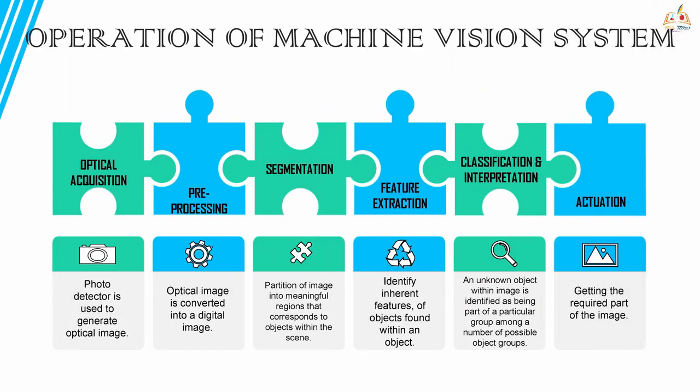Let's look at the operation steps of the machine vision system. The first step is optical acquisition, where the optical image is captured using a photo detector. The second step is preprocessing, where the optical image is converted into digital form. The third step is segmentation, where the optical image is divided into many meaningful regions highlighting the objects.